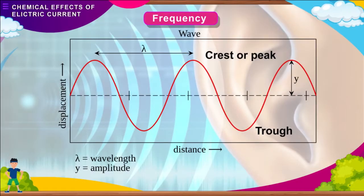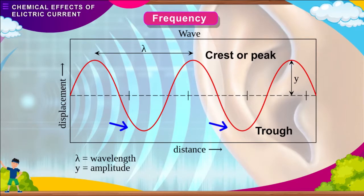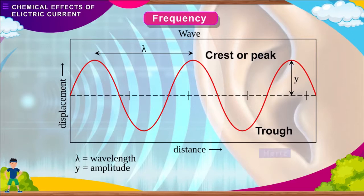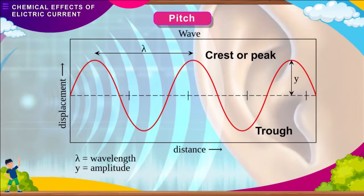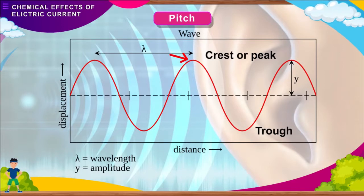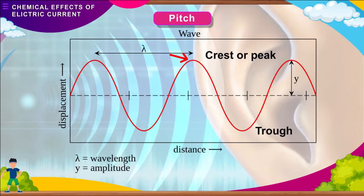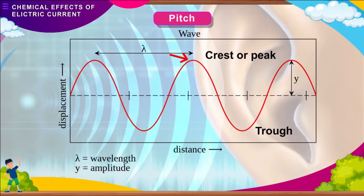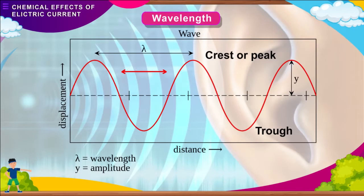Frequency refers to the number of vibrations made by the particles in one second. Frequency is measured in Hertz. Pitch refers to the shrillness of a sound. It depends on the frequency of vibrations — the higher the frequency, the more shrill is the sound. Generally, a woman's voice has a higher pitch than a man's voice.